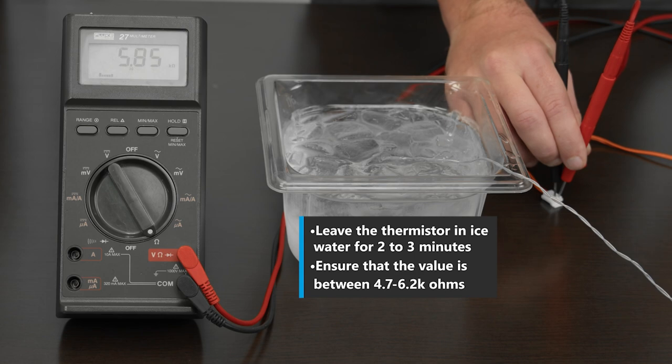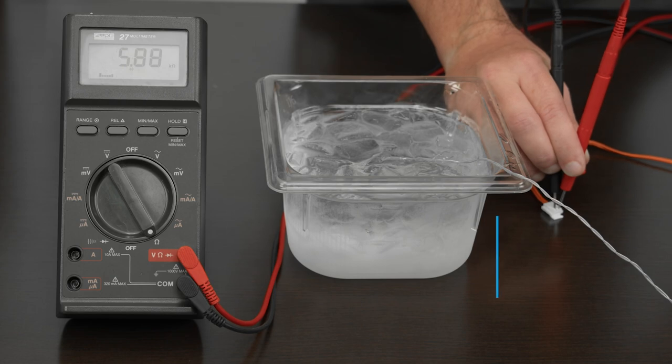If the ohm reading is outside of the range or if the multimeter displays OL, the thermistor will need to be replaced. This can cause a one or two beep alarm. For more information on KM alarms, see the link in the description box.